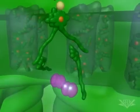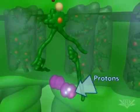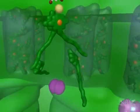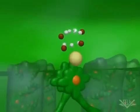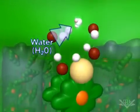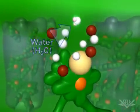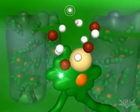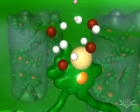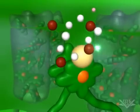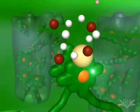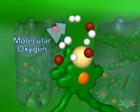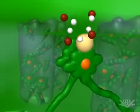In addition to the two electrons, QB also picks up two protons from the stroma. The two electrons lost from photosystem II are replaced by the splitting of water molecules. Water splitting also releases hydrogen ions into the lumen. This contributes to a hydrogen ion gradient, similar to the one created by mitochondrial electron transport. After two water molecules have been split, one molecule of molecular oxygen is created.